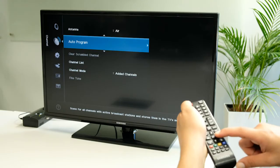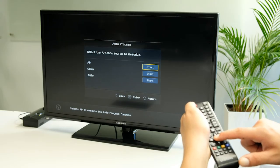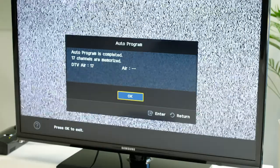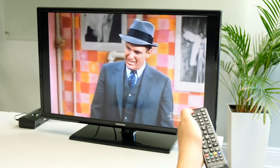Next, go to Auto Program and start the Auto Channel Search. Once the channel search is completed, you are ready to watch free TV channels.